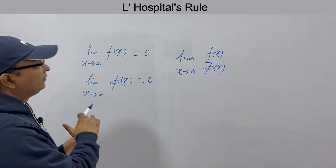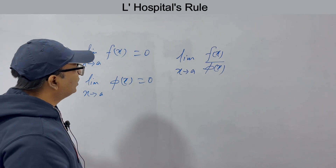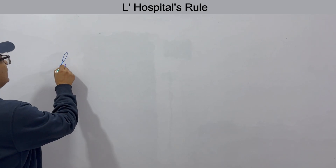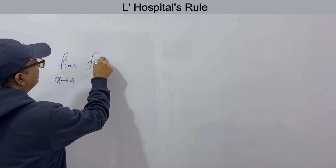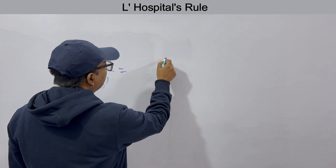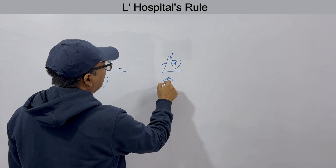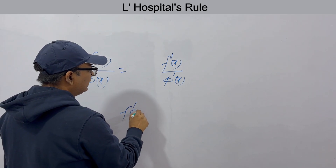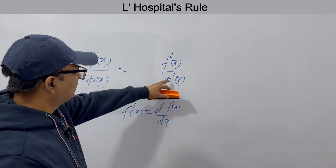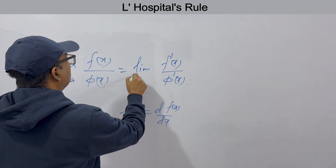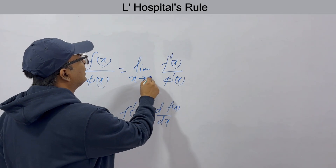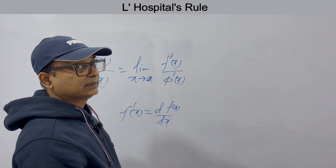We expand the function and we come to a rule called L'Hôpital's Rule. It's very simple. If you are taking limit x tends to a of f(x) by φ(x) and if it is 0 by 0, then you take the first derivative: f′(x) by φ′(x), where f′(x) is d/dx of f(x) and φ′(x) is d/dx of φ(x). So the limit of f(x)/φ(x) as x→a equals the limit of f′(x)/φ′(x) as x→a. This is L'Hôpital's Rule.